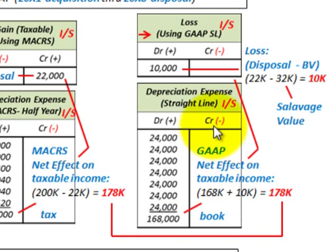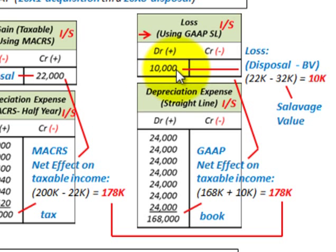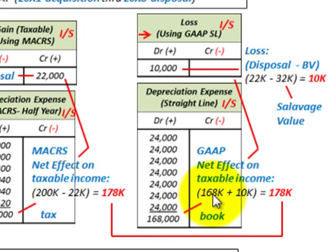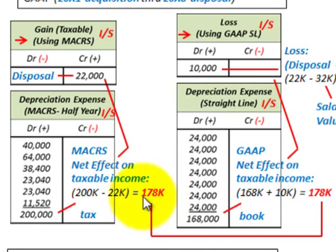For GAAP book purposes using straight line, we have a loss on disposal: the $22,000 disposal value less the $32,000 salvage value gives a $10,000 loss. Our GAAP depreciation expense for all methods was $168,000. So the GAAP net effect on taxable income is $168,000 plus the $10,000 loss, totaling $178,000. Comparing both methods: tax purposes $178,000 versus book purposes $178,000 — they are equal over the asset's life.